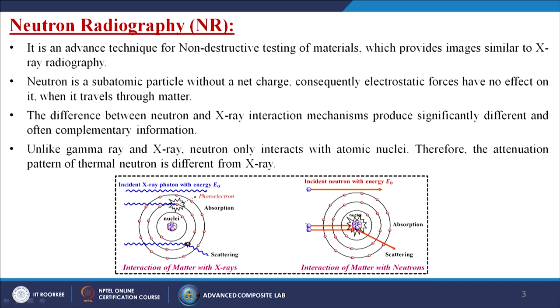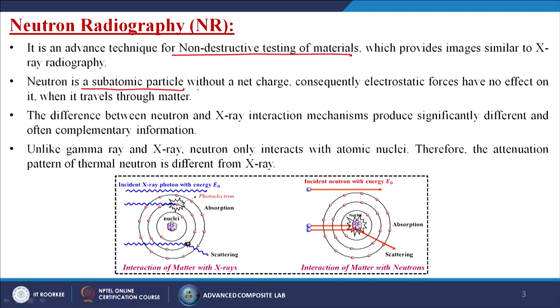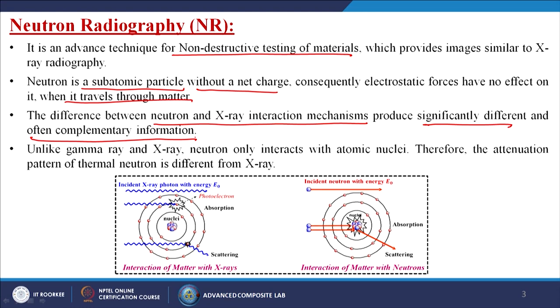What is neutron radiography? It is an advanced technique for non-destructive testing of materials which provides images similar to X-ray radiography at the actual atomic level. A neutron is a sub-atomic particle without a net charge; consequently electrostatic forces have no effect on it when it travels through matter. The difference between neutron and X-ray interaction mechanisms produces significantly different and often complementary information. By normal X-ray we get some data and then we narrow down our inspections to see the exact locations or types of defects.